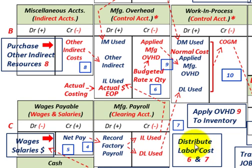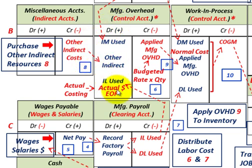Steps six and seven distribute those labor costs. For step six, we credit the manufacturing payroll account for indirect labor used, and that amount is debited to the manufacturing overhead control account for indirect labor. For step seven, we credit the manufacturing payroll account again for direct labor used, and that direct labor is moved up into the work-in-process inventory account, where we debit it for the direct labor used.